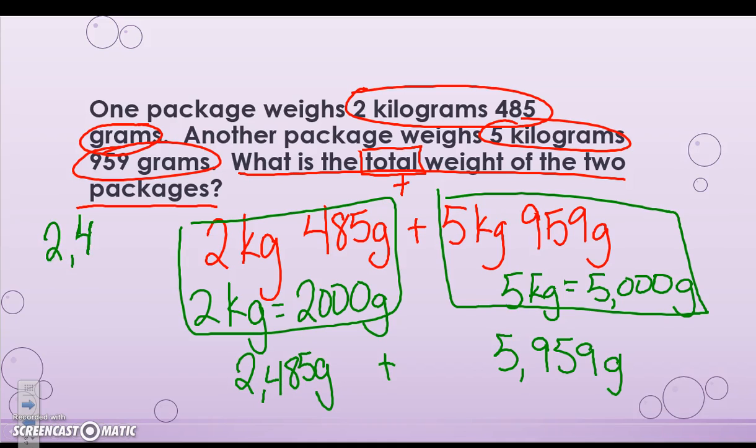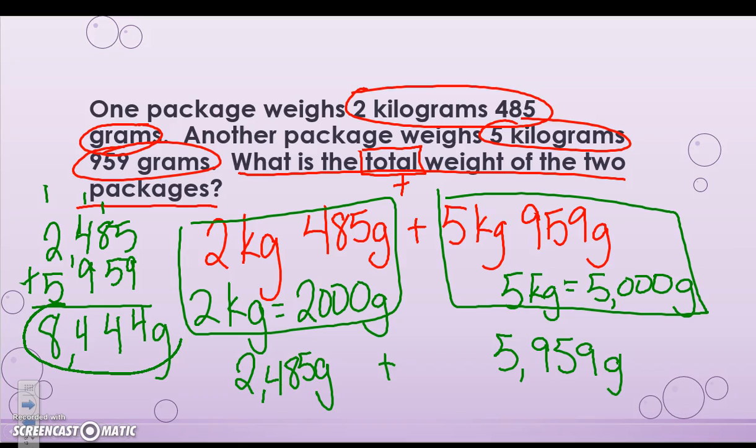So I have 2,485 plus 5,959. 5 and 9 is 14. 8 and 5 is 13, plus 1 is 14. 5 and 2 is 7, plus 1 is 8. So I have a total of 8,444 grams is my weight or my final answer.